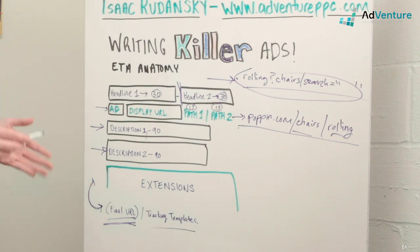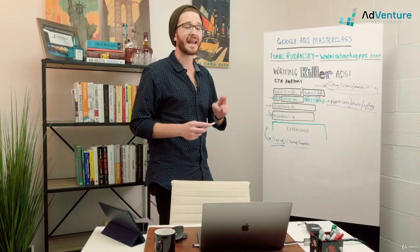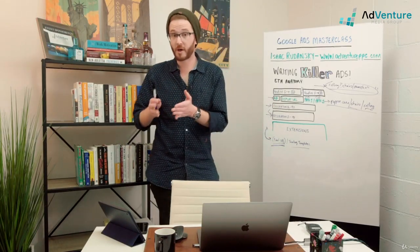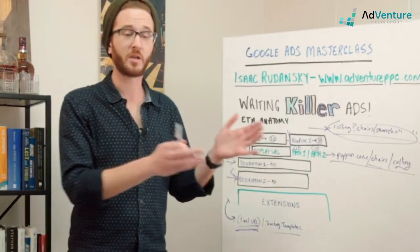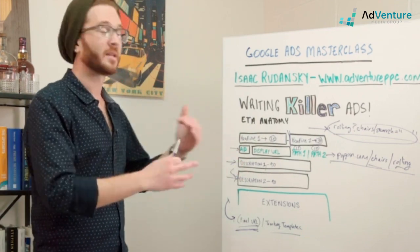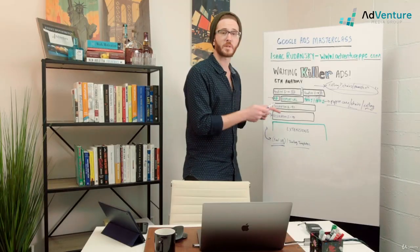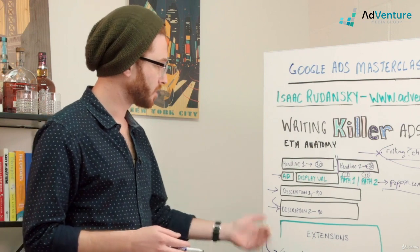Additional supporting information could go in description two. Now, this is not an A/B test—you're not testing description two against description one. There are other tools and vehicles that we'll use in Google Ads to test different ad headlines, to test different descriptions, to test ads against each other, absolutely. But your two descriptions in an ad are not meant as an A/B test. You'll have your description one and sometimes you'll also have description two.